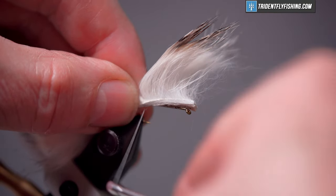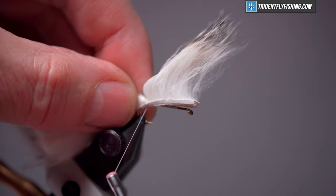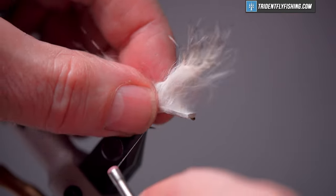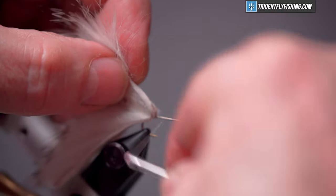Because the thread is white we won't see this tie-in point when the fly is finished. We'll jump our thread in front and make some tight wraps. That will lock that in place.